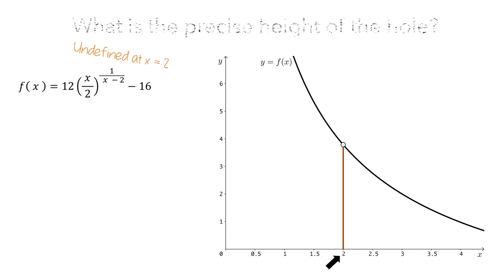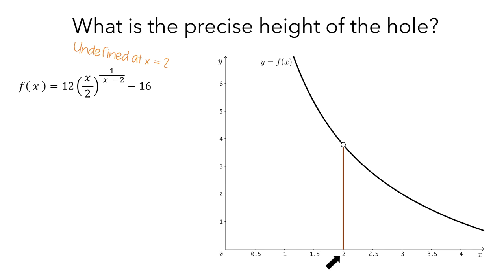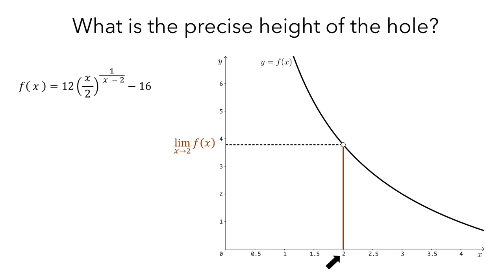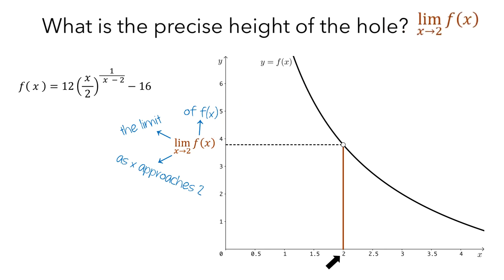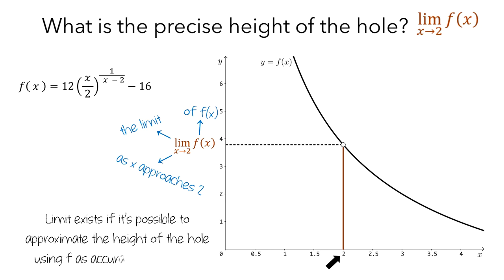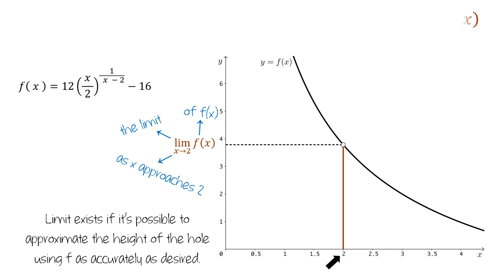To find the precise height of this hole, we can ask: what is the precise height of this hole? It looks like this value is roughly 3.8 units. Instead of zooming in immediately, let's think about a systematic way to find the height of the hole as accurately as desired. This precise value is denoted by the limit notation, read as the limit as x approaches 2 of f of x. This limit exists if it's possible to approximate the height of the hole using f as accurately as desired.